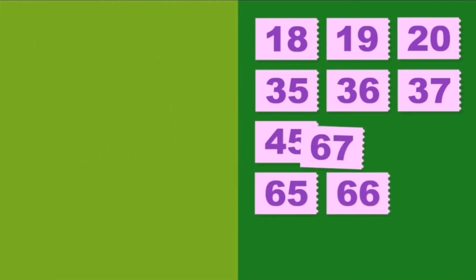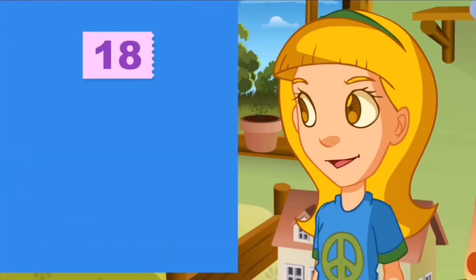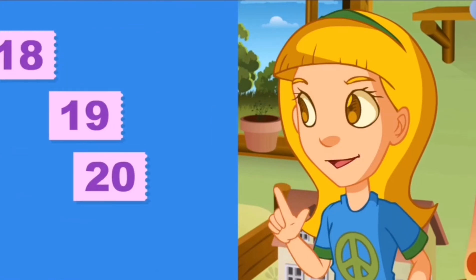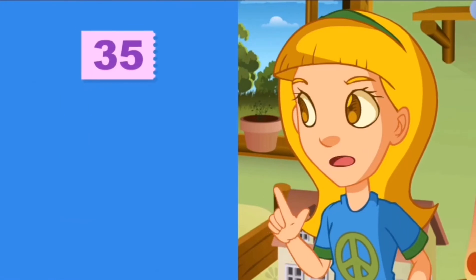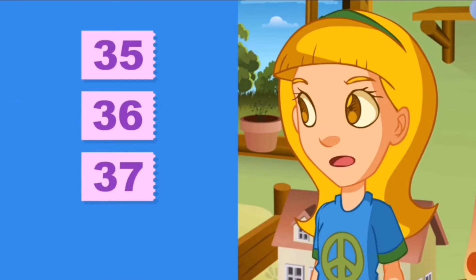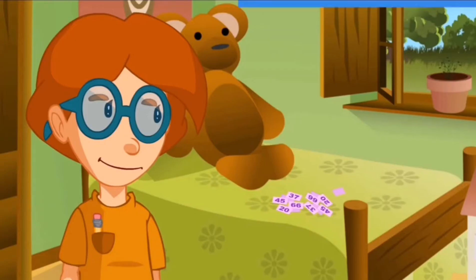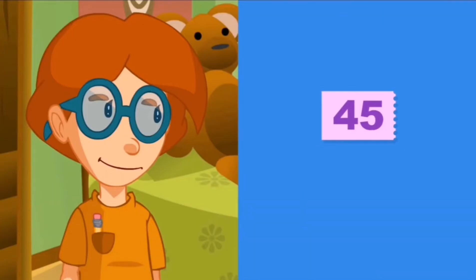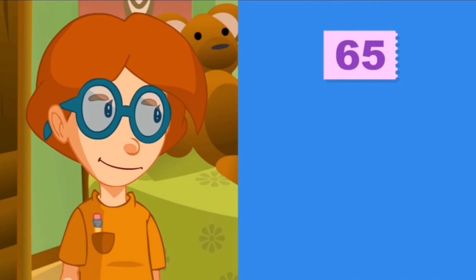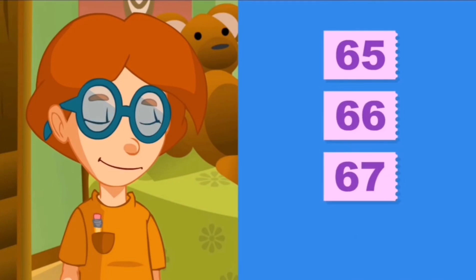I'll put them in order now, so I'll have all my numbers arranged. I have eighteen, nineteen, and twenty. And also thirty-five, thirty-six, and thirty-seven. Forty-five is alone. But then I have sixty-five, sixty-six, and sixty-seven.